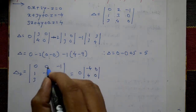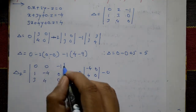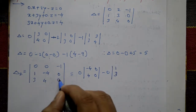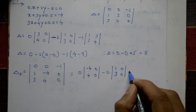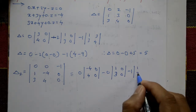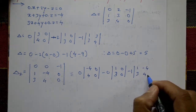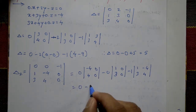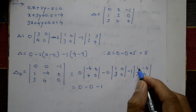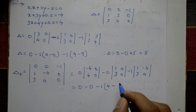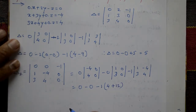Expand delta_2: 0 times the minor of minus 4, 0, 4, 0 equals 0; minus 0 times the minor equals 0; minus 1 times the minor of 1, minus 4, 3, 4. That minor is 1 times 4 minus 3 times minus 4, which is 4 plus 12 equals 16. So minus 1 times 16 equals minus 16.